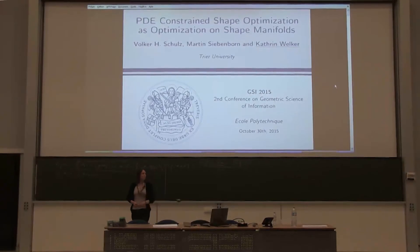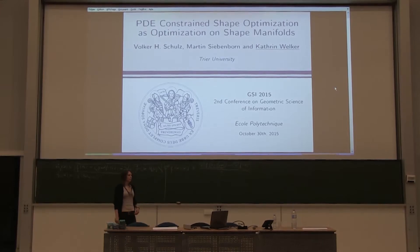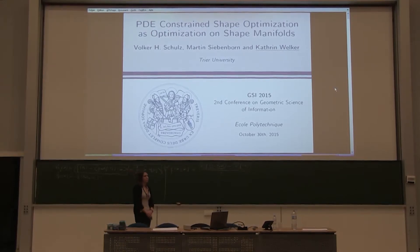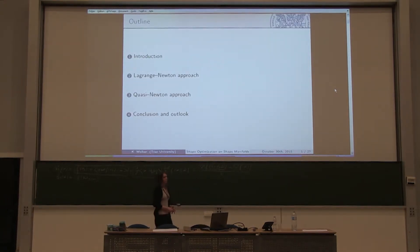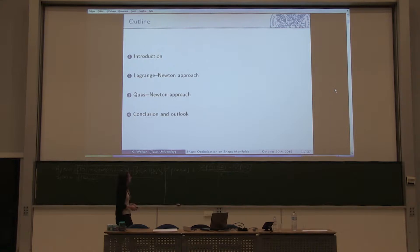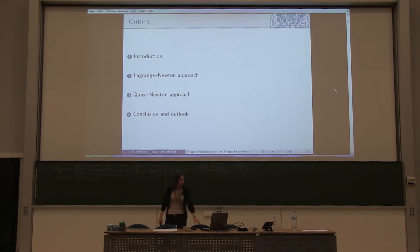My talk is about PDE constraint shape optimization as optimization on shape manifolds. It is a joint work with Volker Schulz, my supervisor, and Martin Siedenborn. First, I will give a brief introduction presenting a PDE constraint shape optimization problem and the questions which arise. Then I explain how we can solve such a problem, presenting two approaches: a Lagrange-Newton approach and a quasi-Newton approach.